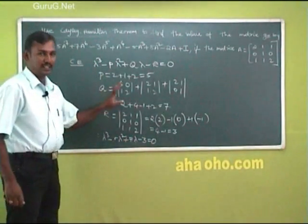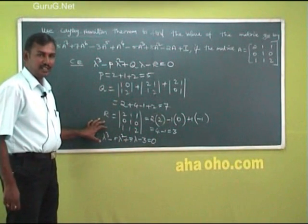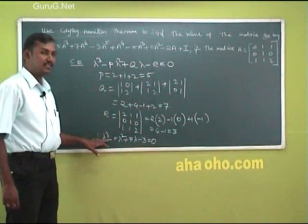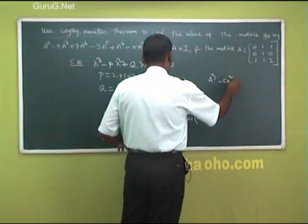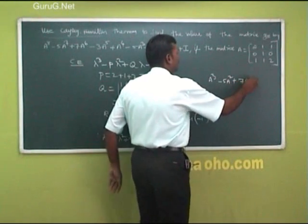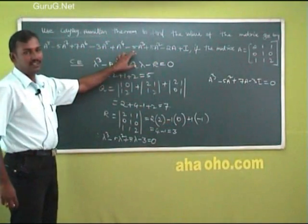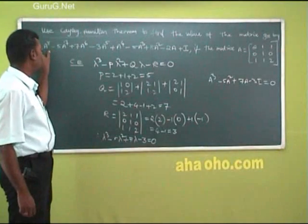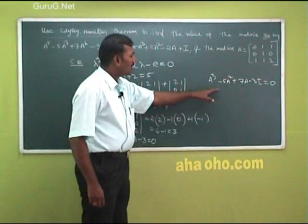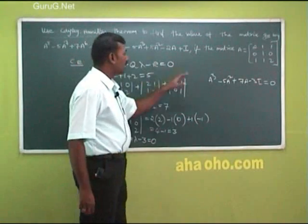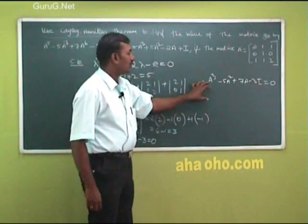This is the characteristic equation of the given matrix. By the Cayley-Hamilton Theorem, every square matrix satisfies its own characteristic equation, so A³ − 5A² + 7A − 3I = 0. We need to find the value of the given expression without computing A⁸ directly. We simplify the expression algebraically and apply this result.